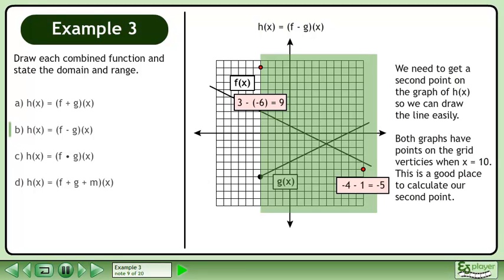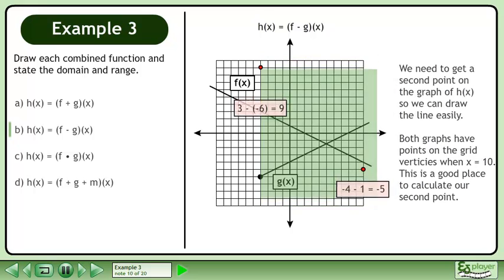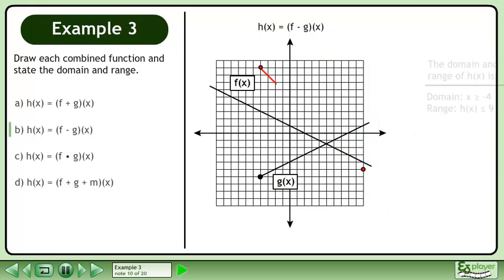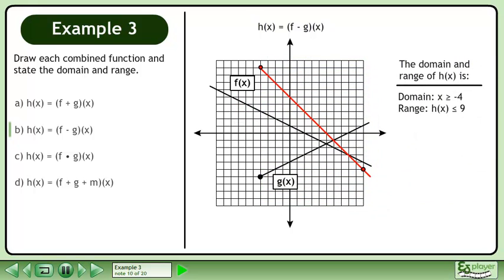This is a good place to calculate our second point. The domain of h is x is greater than or equal to negative four, and the range is h is less than or equal to nine.